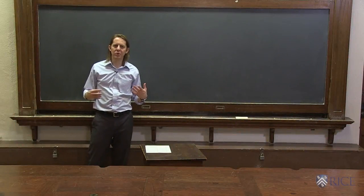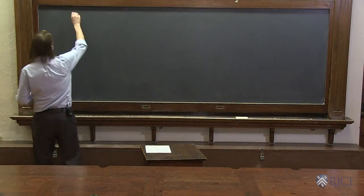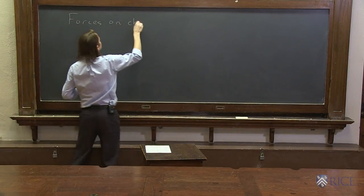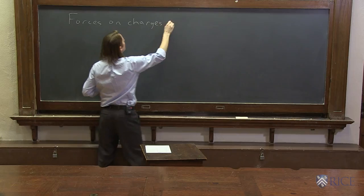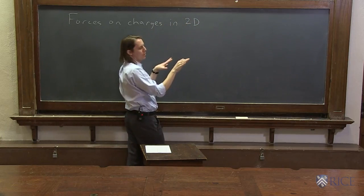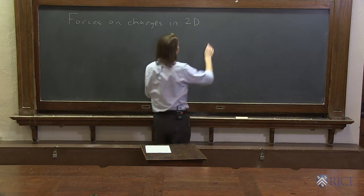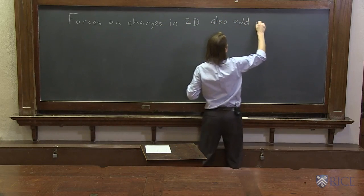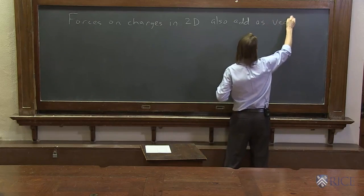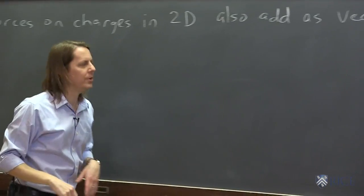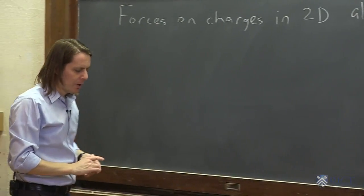So we've added up some forces on charges in 1D, but we can also add them in 2D. Forces on charges in 2D - and by 2D I just mean they're spread around on a plane, they're not just on a line. And 2D forces also add as vectors, or I might be willing to say they superpose, they obey superposition.